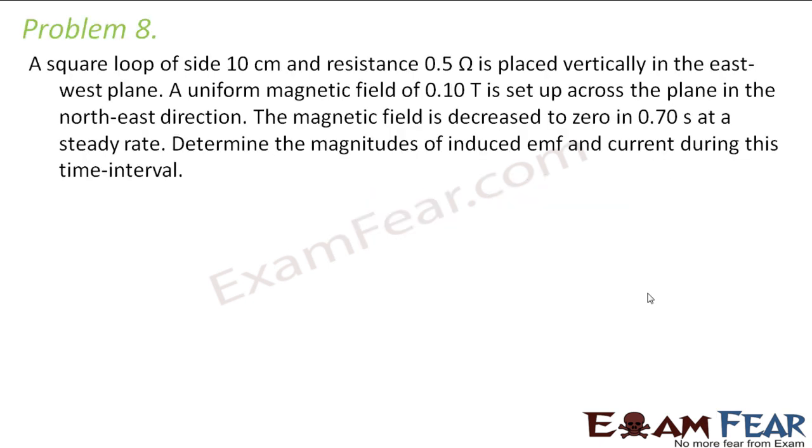Now let us look at the last problem of this topic. Then we will start with some other new topics. It says that a square loop of side 10 cm and resistance 0.5 ohms is placed vertically in the east-west plane.